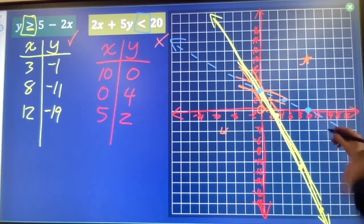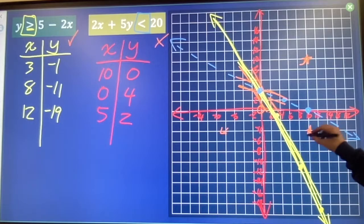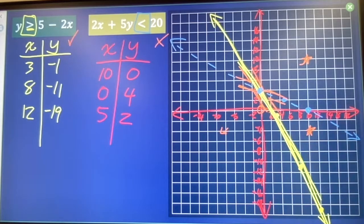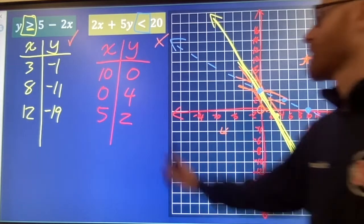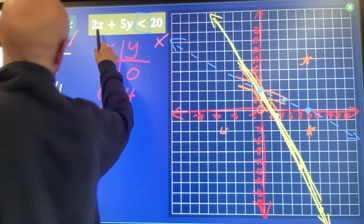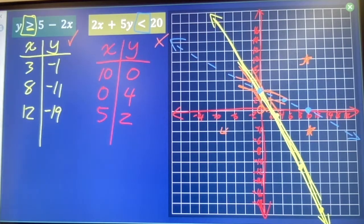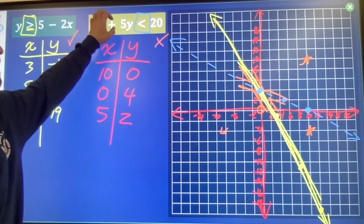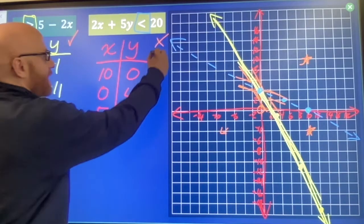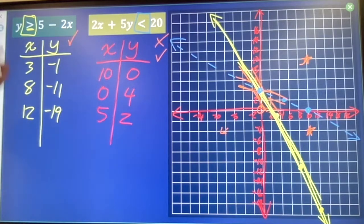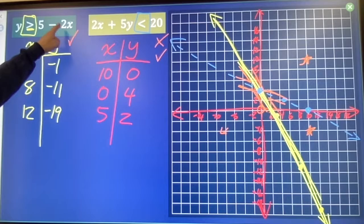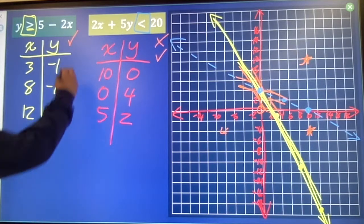10, negative 4, and negative 4. When x is 10, we've got 20. When y is negative 4, we've got negative 20. 20 minus 20 is 0. Is that less than 20? Yes. This guy. 10, negative 4. 2 times 10 is 20. 5 minus 20 is negative 15. Is that less than negative 4? Yes.